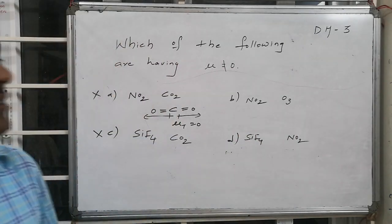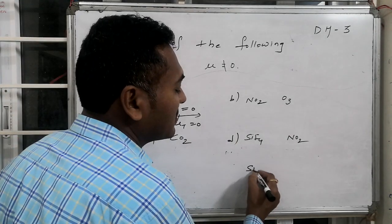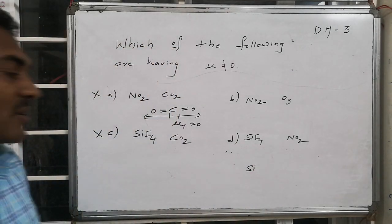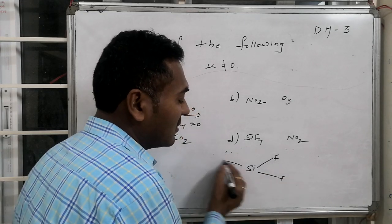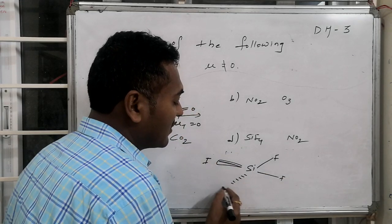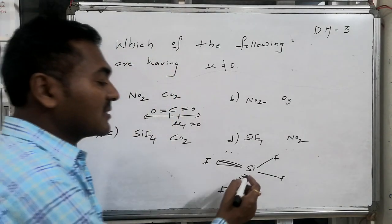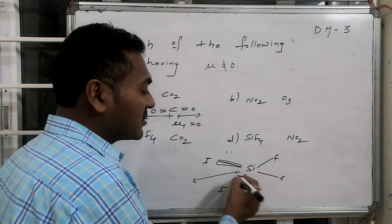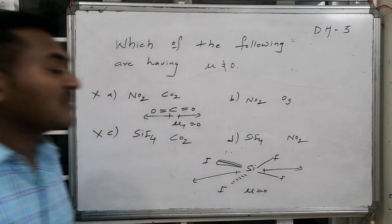If I go for SiF₄, it is similar to carbon tetrachloride or methane, in which silicon is connected with four fluorines. Two are present on the plane, two are present away from the plane—one is dark side, the other dotted side. These dipole moments are present in opposite directions and cancel with one another.